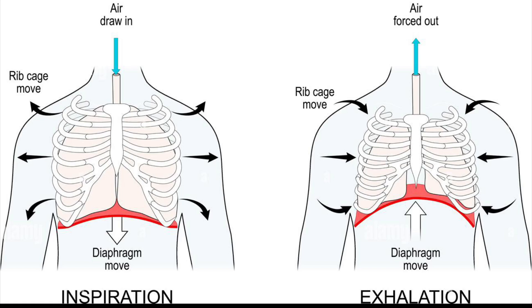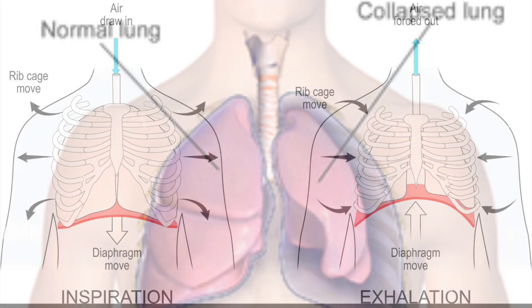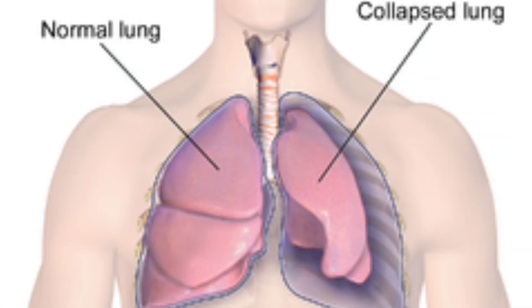Whenever the lungs or thoracic cavity are unable to maintain these positive and negative pressures, or there's a hole in the system, is when we have a life-threatening event. A pneumothorax is when there is pressure inside the chest cavity preventing the lungs from expanding.